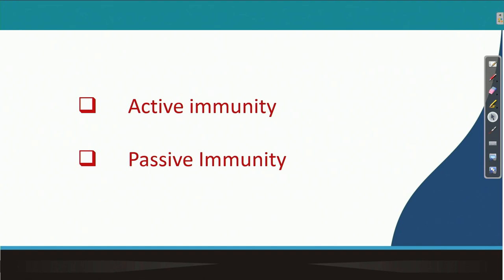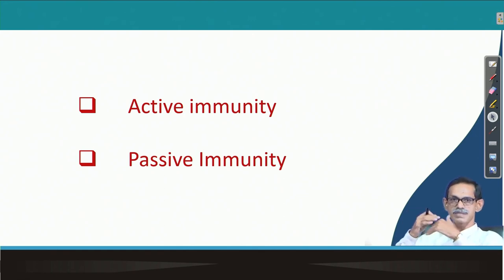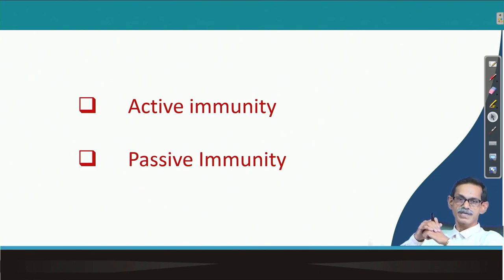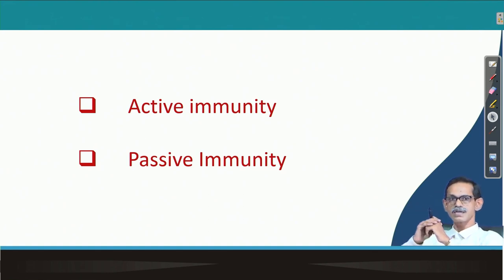What is active immunity? Active immunity means when our immune system gets some infection and in response to that infection it elicits an immune response to fight against it. Active immunity can happen when our immune system responds to either a natural or real infection, or if we deliberately inject something which is antigenic or immunogenic — then it will also respond to it and elicit the immune response. Both are active immunity.